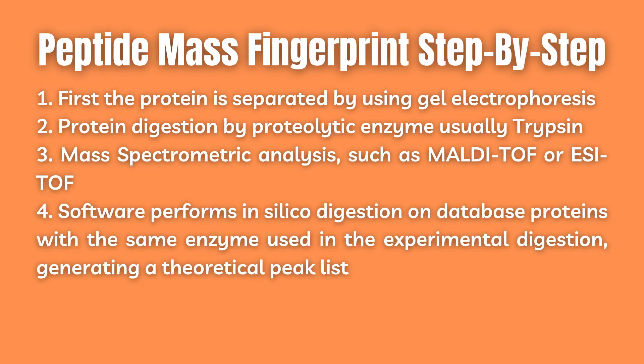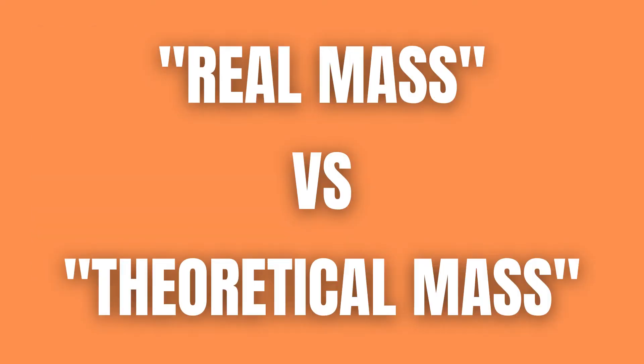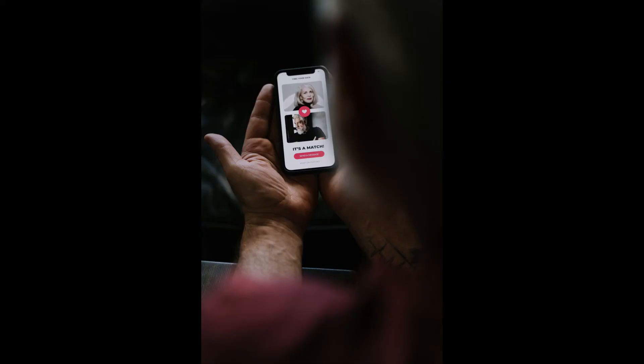Fourth, software performs in silico digestion on database proteins with the same enzyme used in the experimental digestion, generating a theoretical peak list. We can then compare our real values for our peptides with the theoretical values for the same peptides produced by the computer in order to find a match.